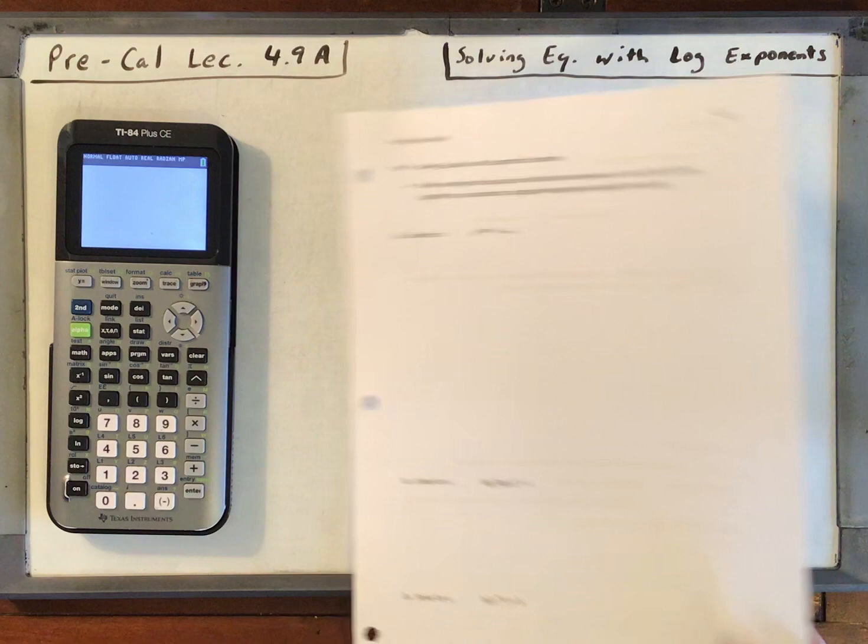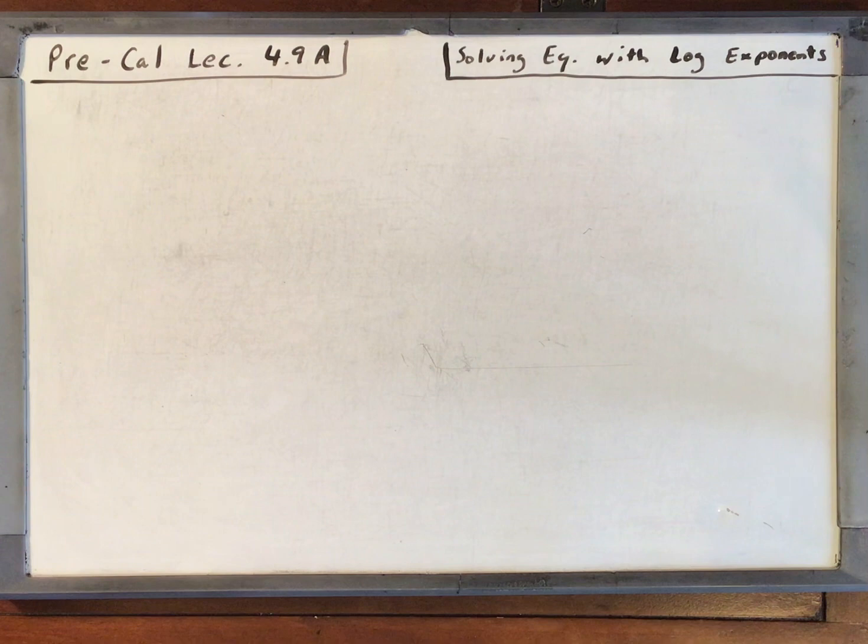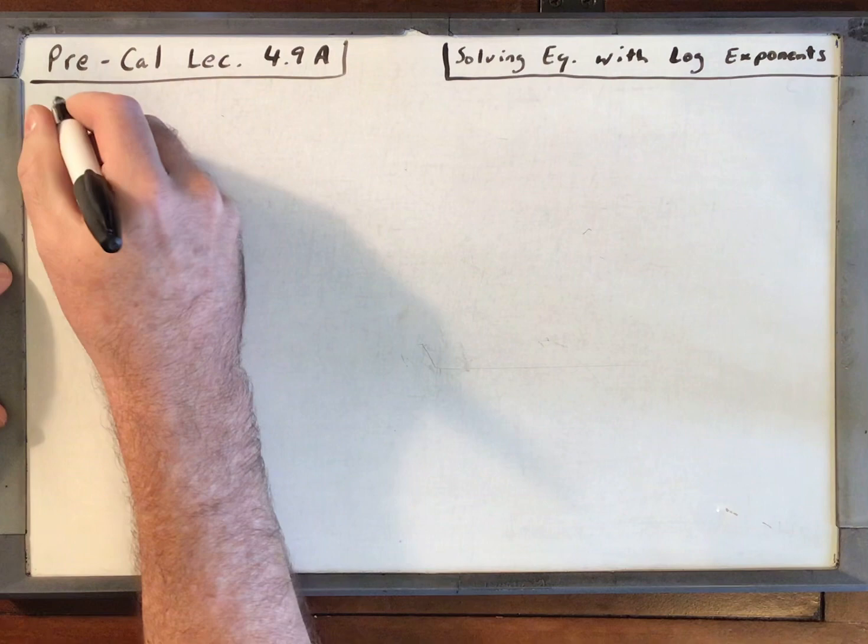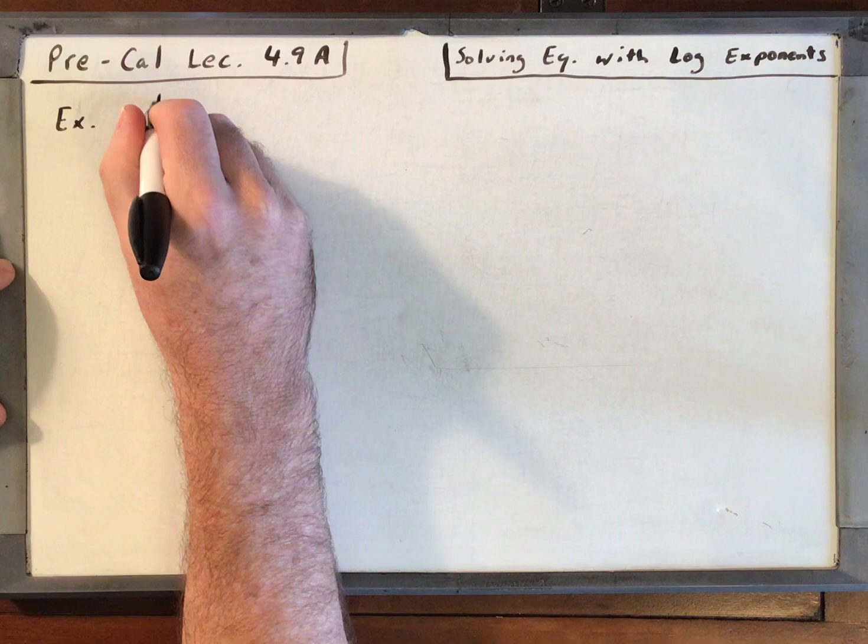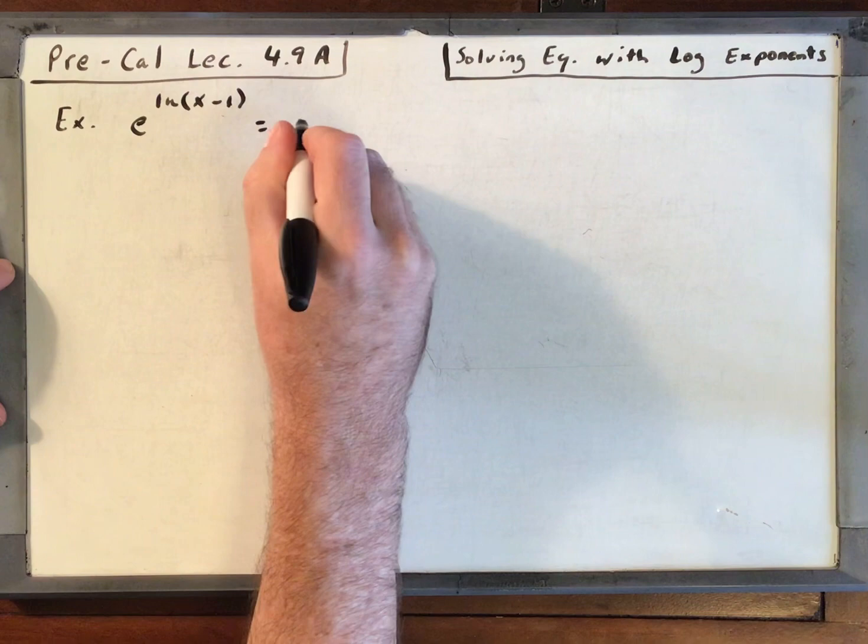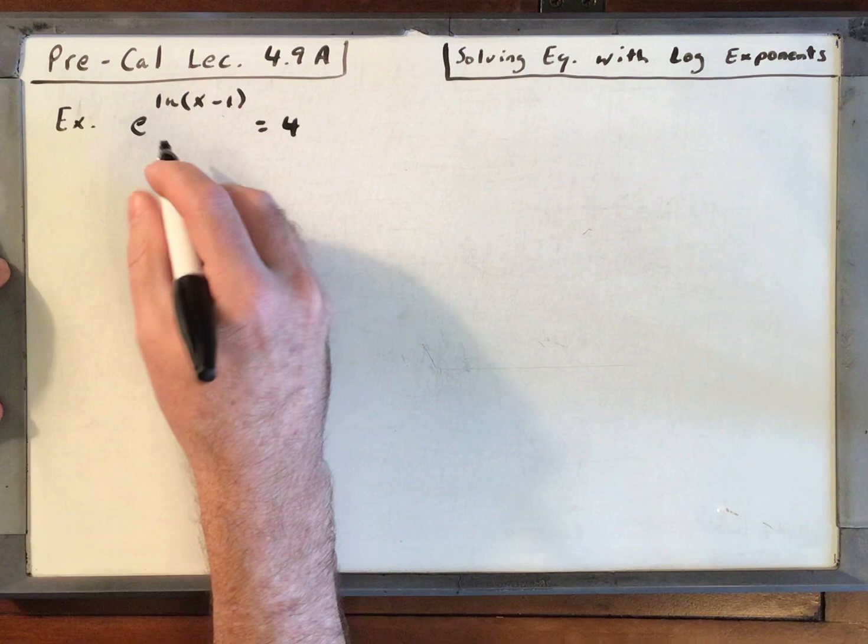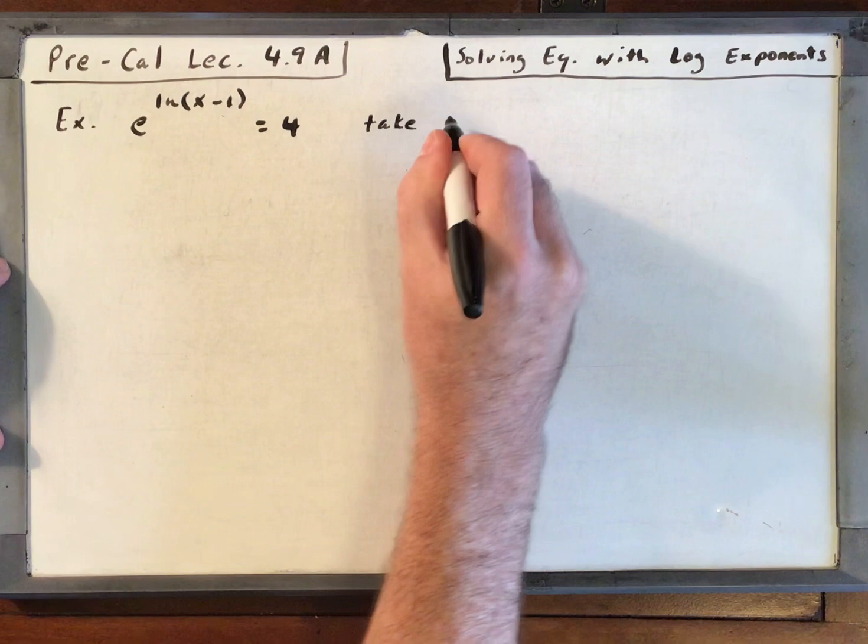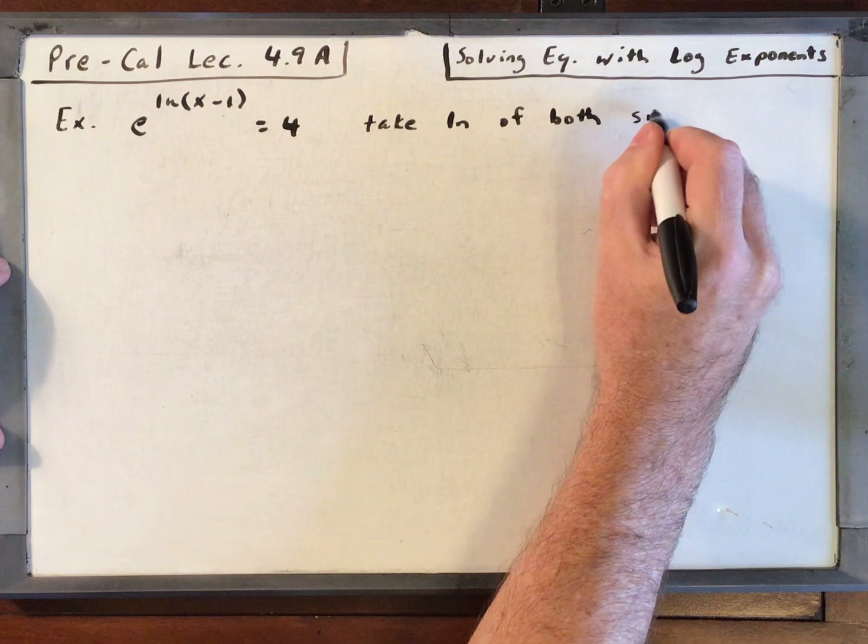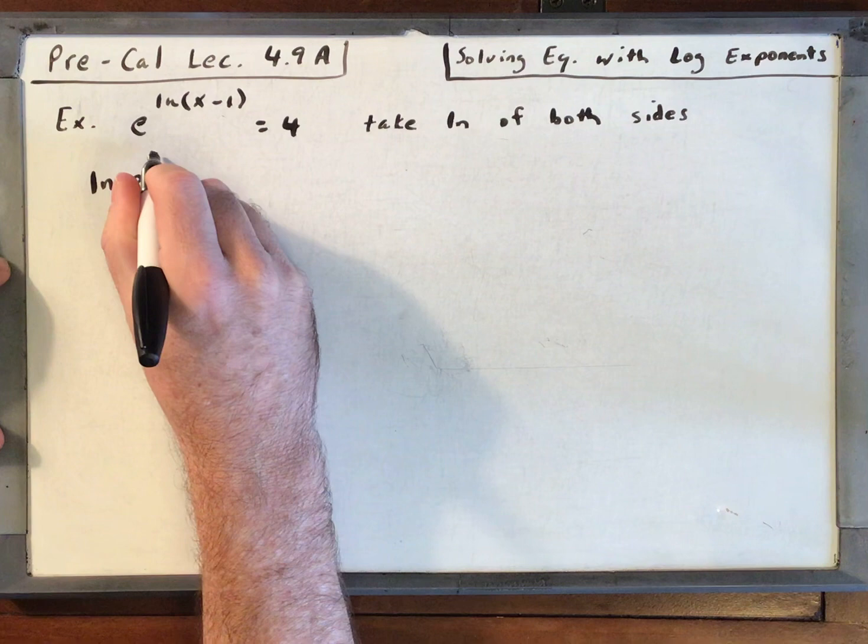First I'm going to work this problem the long way, and then show you a nice shortcut trick. So we have e to the natural log of x minus 1 is equal to 4. We want to solve for x. First, we could use the properties of logs. Anytime e is involved, you want to use natural logs. So let's take the natural log of both sides. We've got the natural log of e to the natural log of x minus 1 is equal to the natural log of 4.